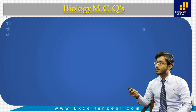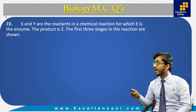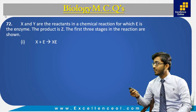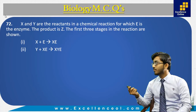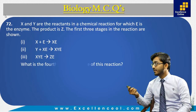Next is MCQ number 72. In this we are asked: X and Y are the reactants in a chemical reaction for which E is the enzyme, and the product is Z. The first three stages in the reaction are shown. Number 1: X + E → XE. Number 2: Y + XE → XYE. Number 3: XYE → ZE. What is the fourth and final stage of this reaction?